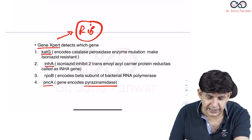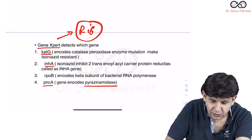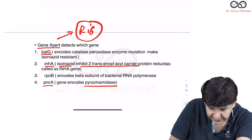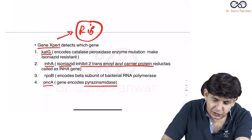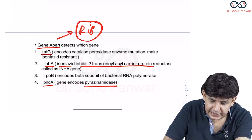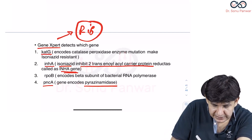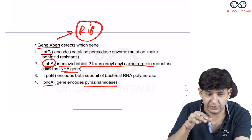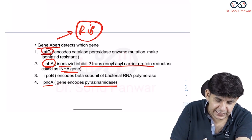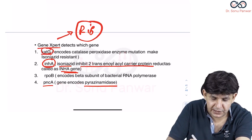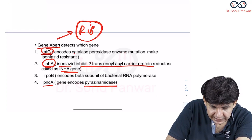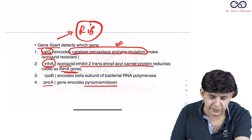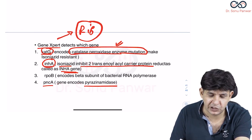PNCA encodes pyrazinamidase. INHA codes for the enzyme that isoniazid inhibits — that is 2-trans-enoyl-acyl carrier protein reductase, also called the INHA gene. So INHA is responsible for resistance in isoniazid. And KATG is also responsible for isoniazid resistance.